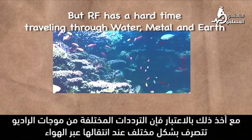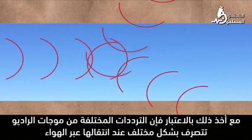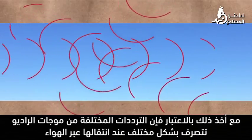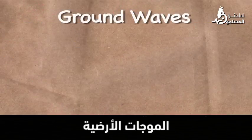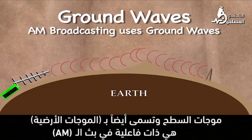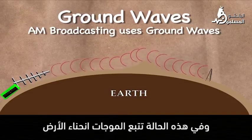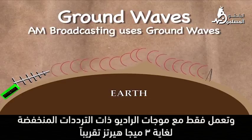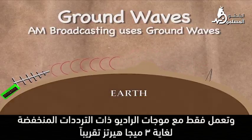With that in mind, different frequencies of radio waves behave differently as they travel through the air. Surface waves, also called ground waves, are in effect for AM broadcasting. This is where the radio waves follow the curvature of the earth and are capable of traveling great distances. This only works with low frequency radio waves, up to about 3 MHz.